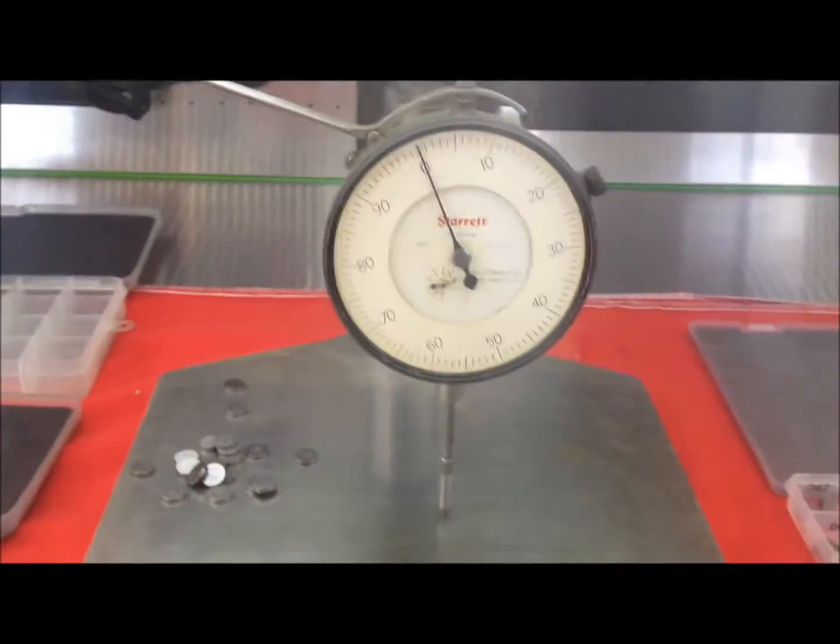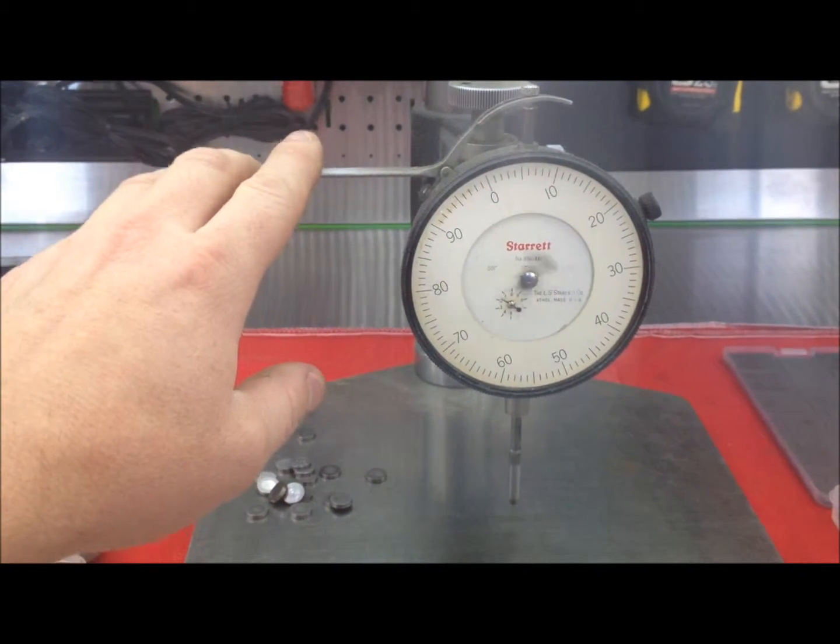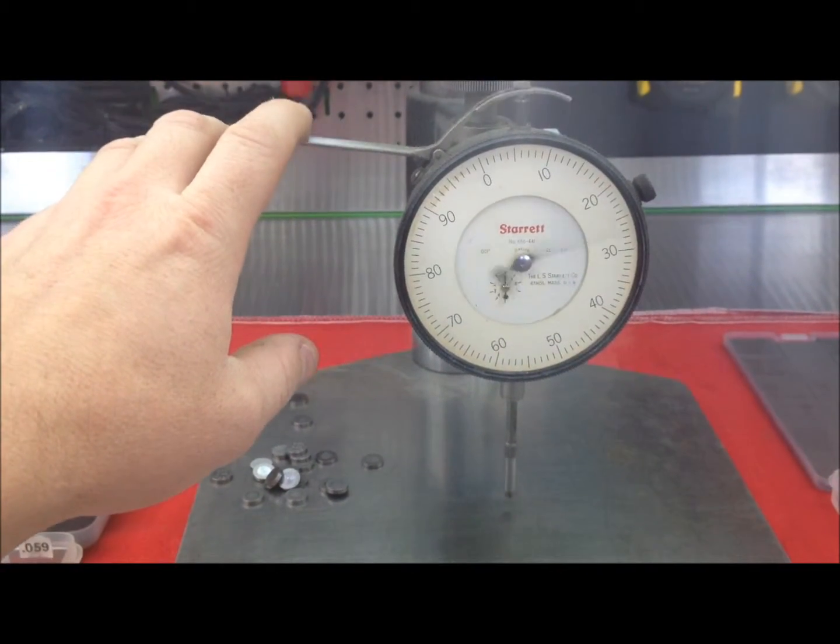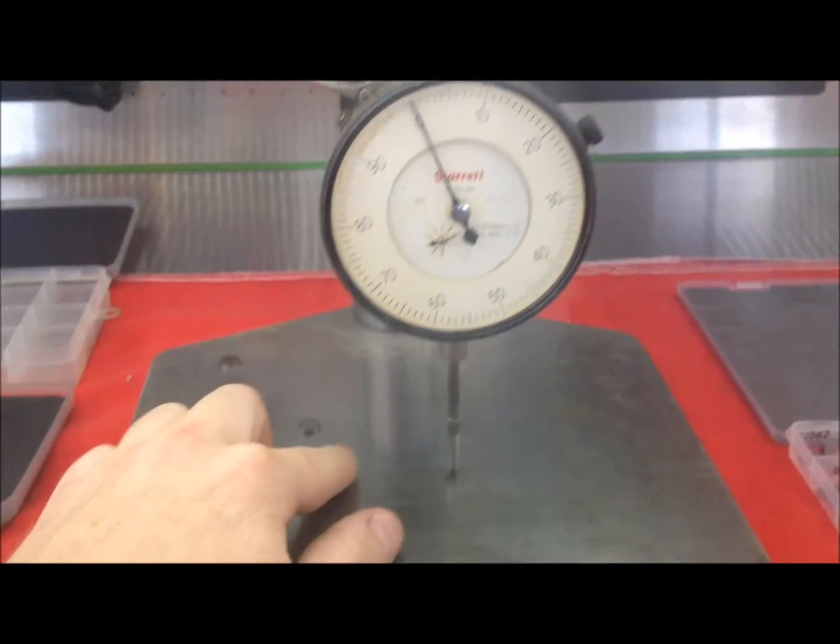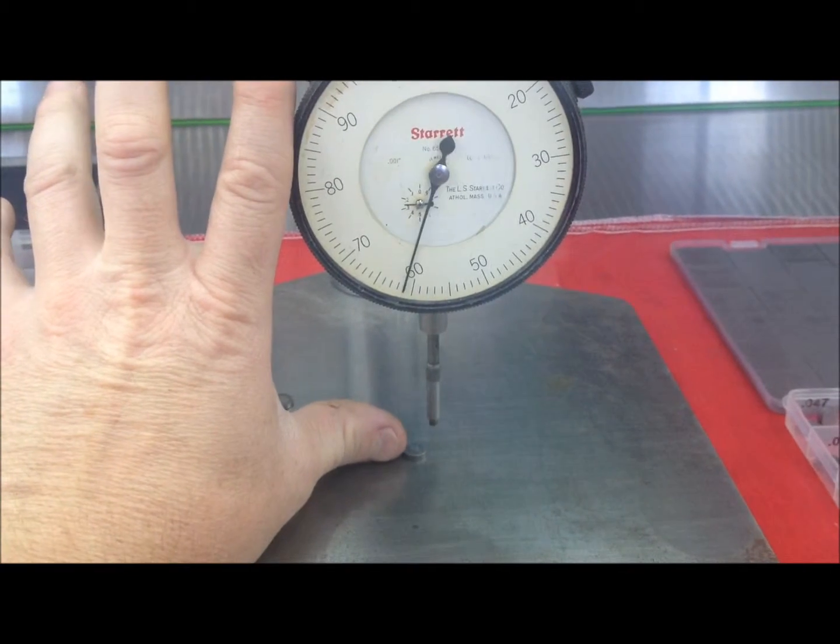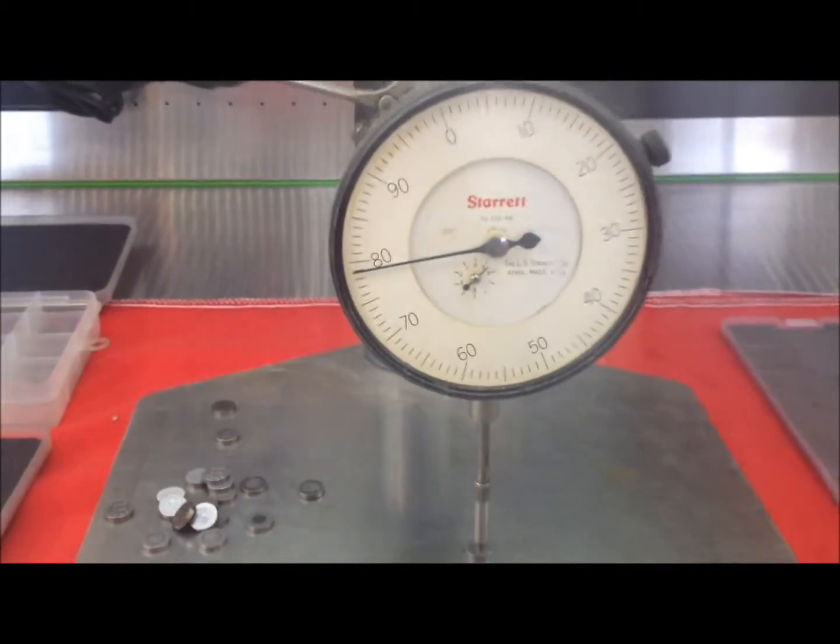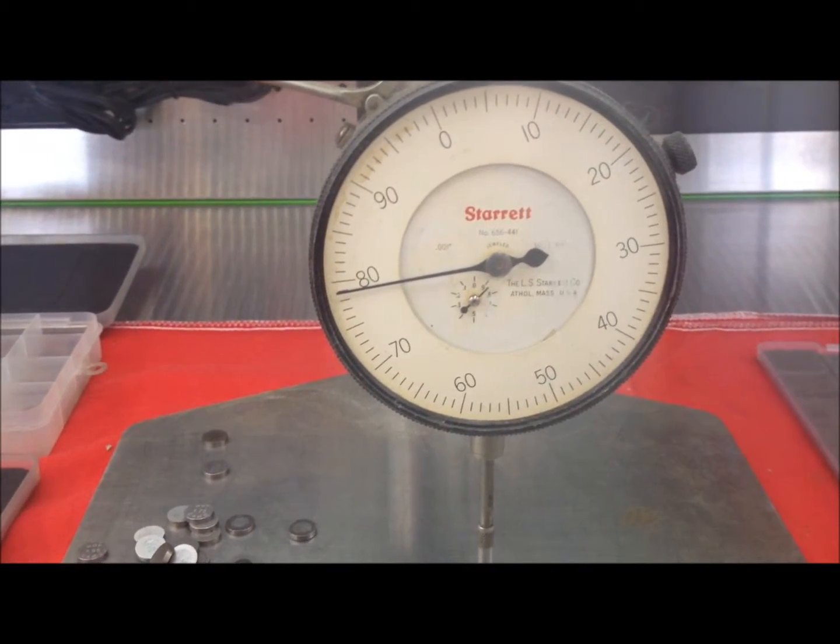Now as you see I've got a nice starrett dial indicator, and what's nice I can just load these like this. So I can take a shim, raise this up, stick the shim underneath of it, and just drop it down.